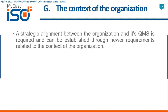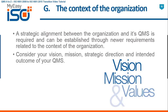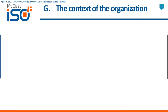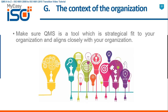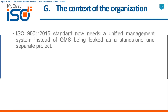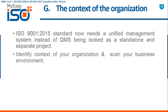G — Context of the Organization. A strategic alignment between the organization and its QMS is required and can be established through newer requirements related to the context of the organization. Consider your vision, mission, strategic direction and intended outcome of your QMS. Make sure QMS is a tool which is a strategic fit to your organization and aligns closely with your organization. ISO 9001 2015 now needs a unified management system instead of QMS being looked at as a standalone and separate project. Identify the context of your organization and scan your business environment. Use SWOT and PESTEL analysis if required.